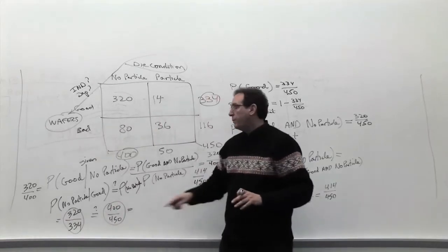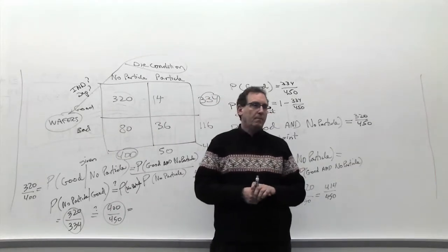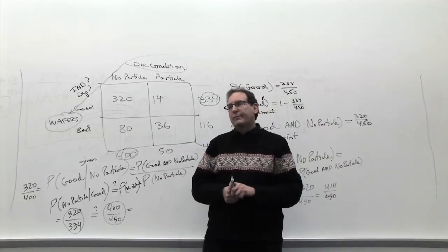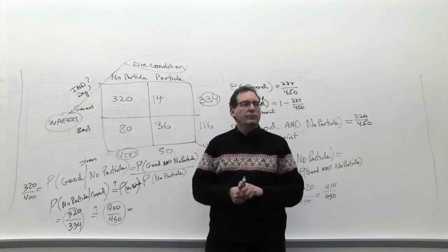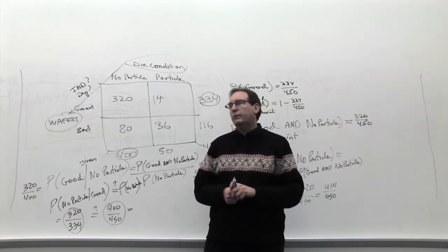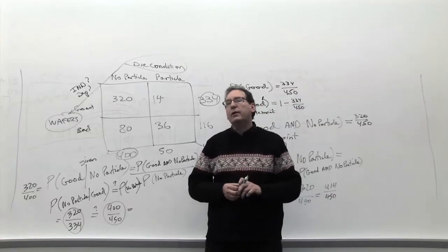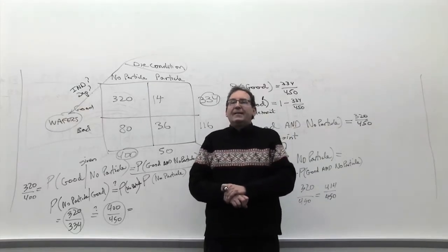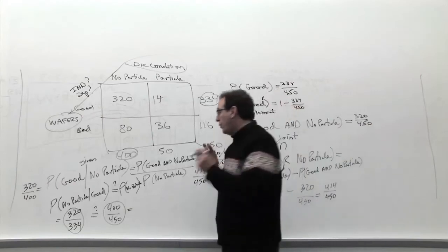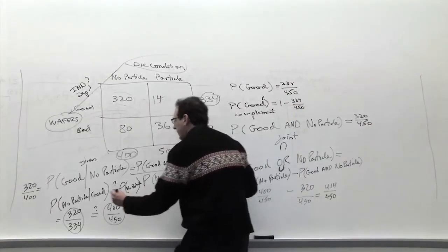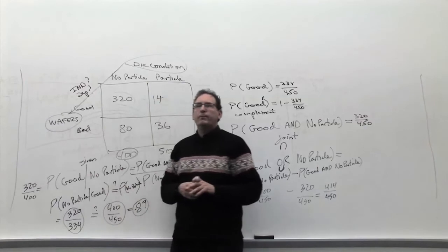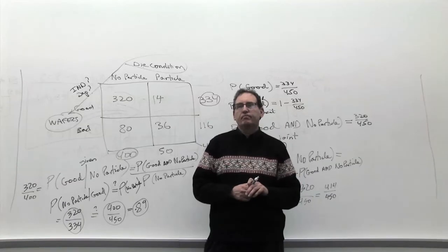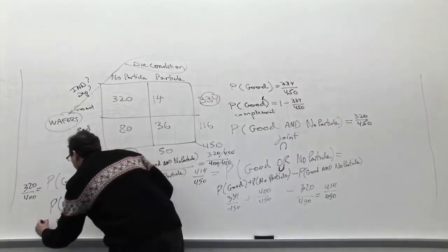And if anybody wants to share with me, what is 400 out of 450 as a decimal? I'm going to repeat my appeal to bring the calculator to class at all the time, so you can at least calculate. What is 400 divided by 450? 0.89. How much is it? 0.89. And then let's see what's the other side. What's 320 out of 334? 0.96.